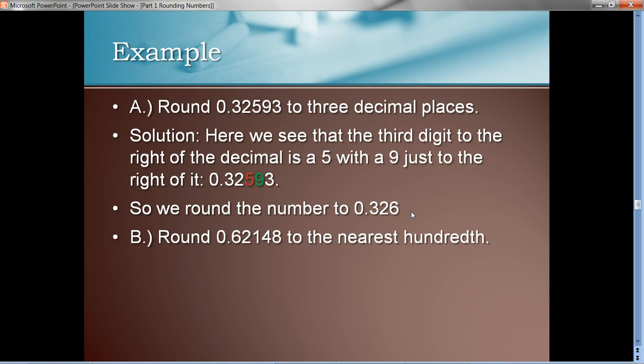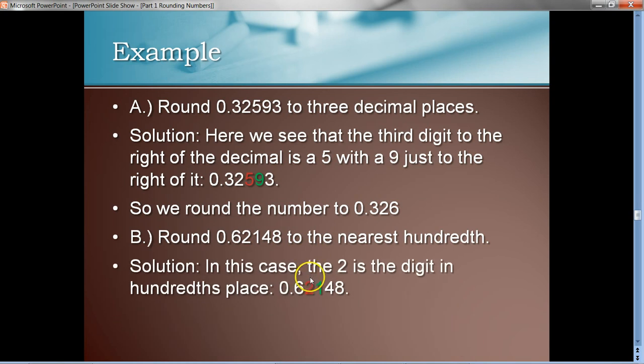All right? Now, let's take a look at one more here. Round 0.62148 to the nearest hundredth. Well, the nearest hundredth, that would be the second decimal place, wouldn't it? All right? So, what we want to do is to examine that digit, and then examine the digit just to the right of it.